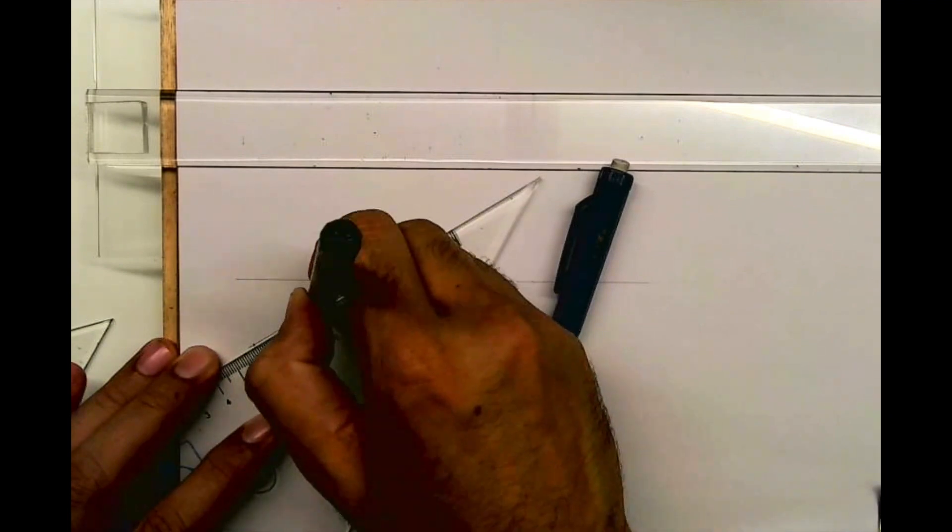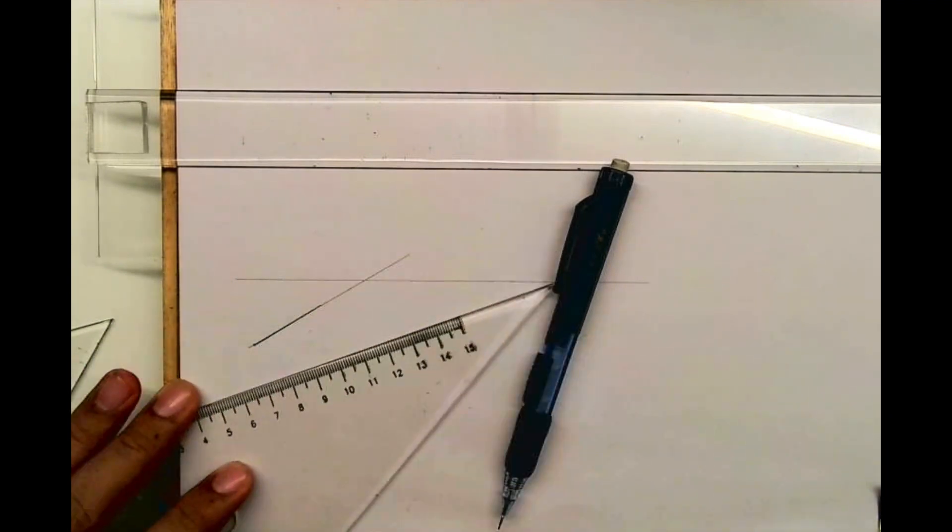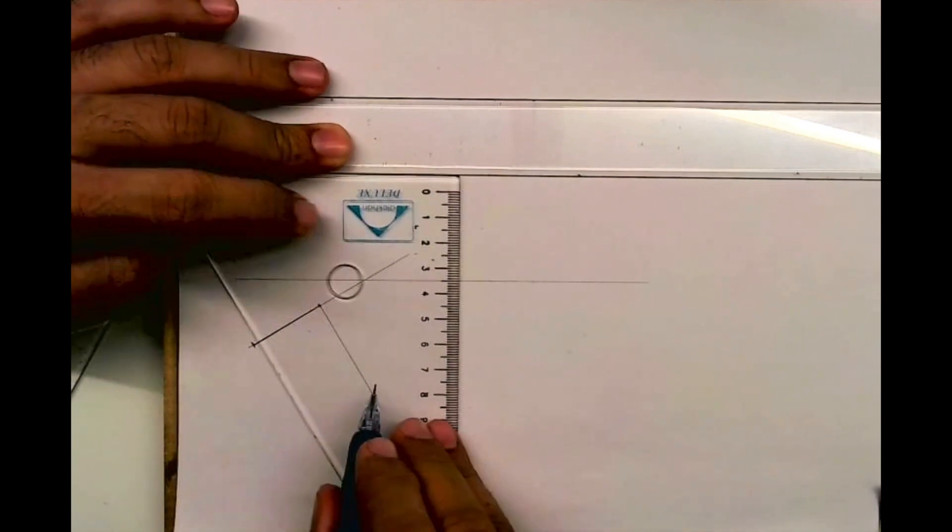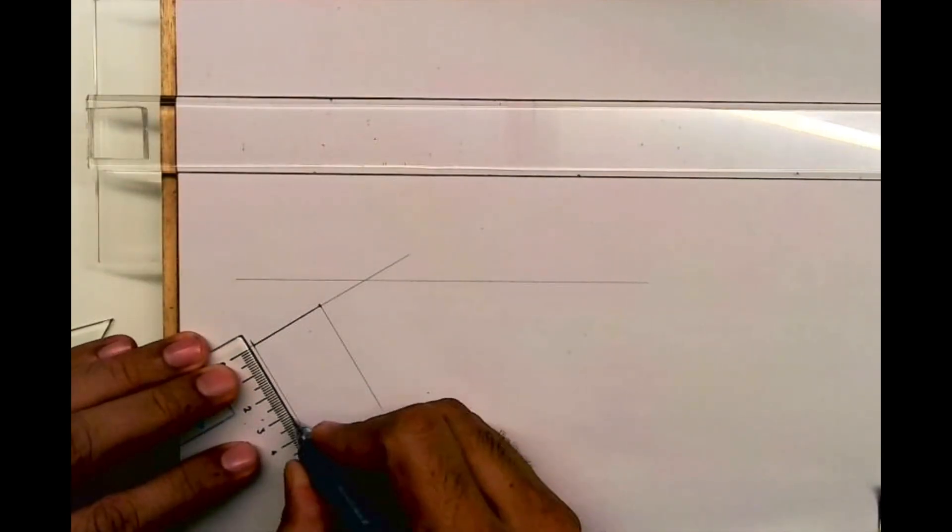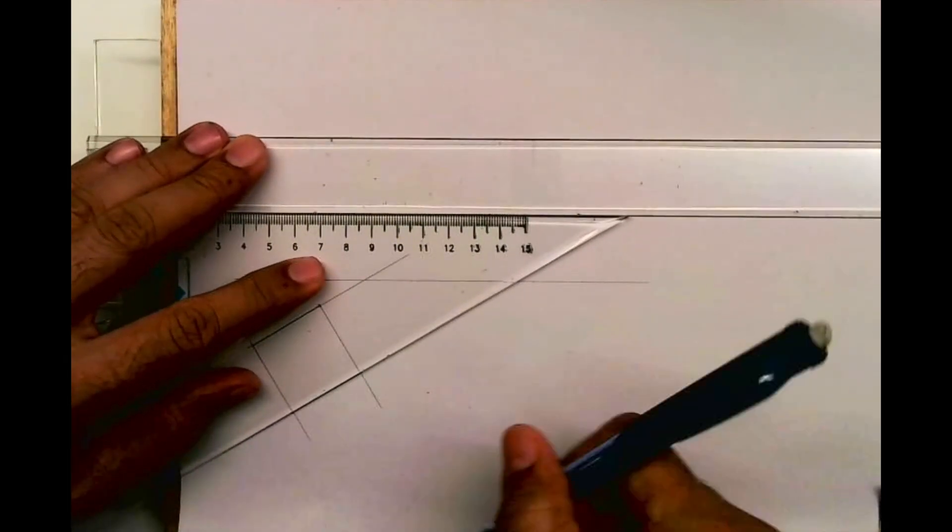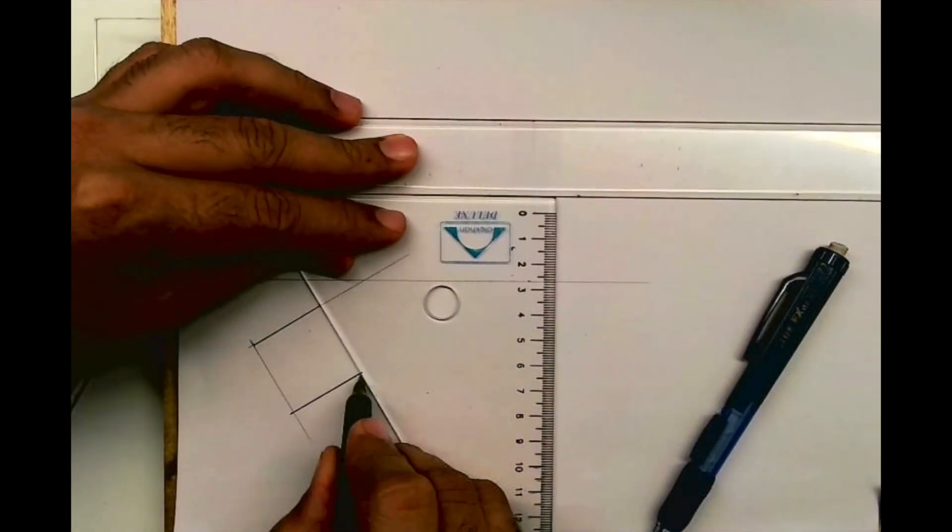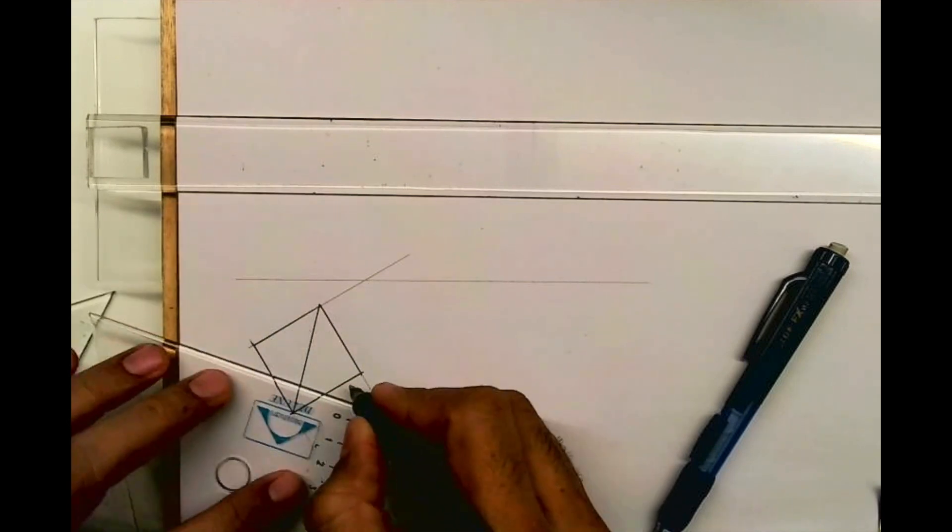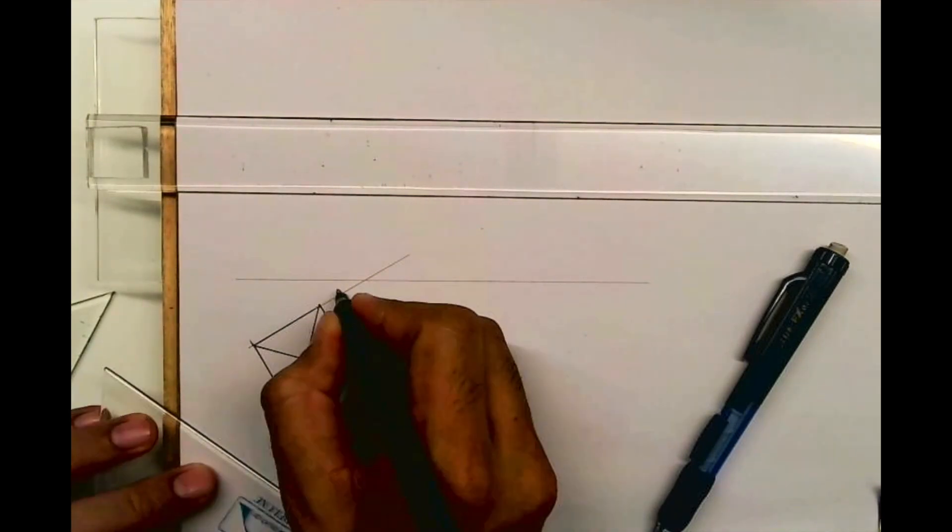Since it is resting on HP, top view will come down. We are doing first angle and we'll draw 60 degrees like this. First we will draw square inclined at 30 degrees. One side is inclined at 30 so the other side will be automatically inclined at 30.